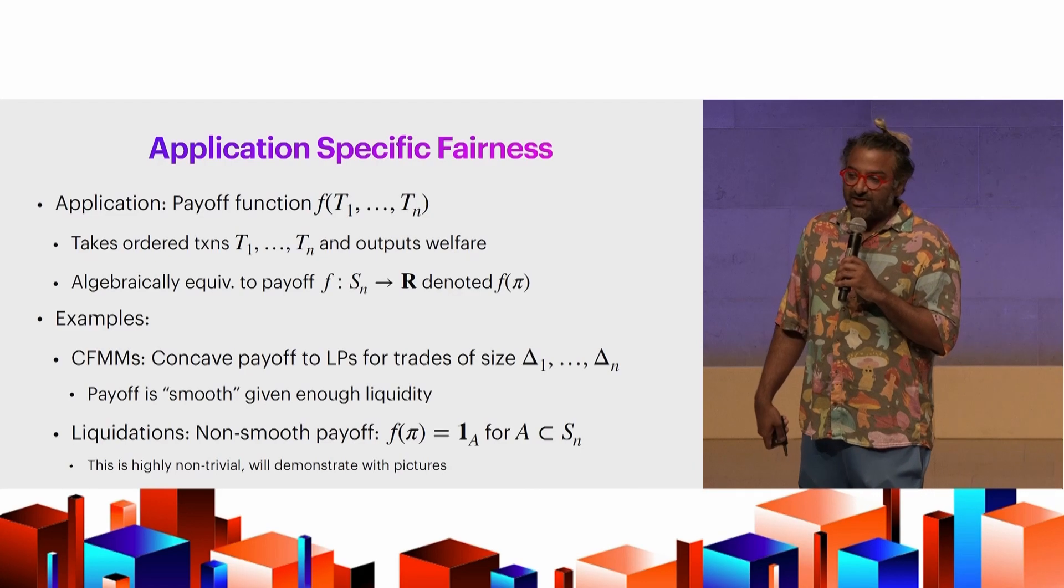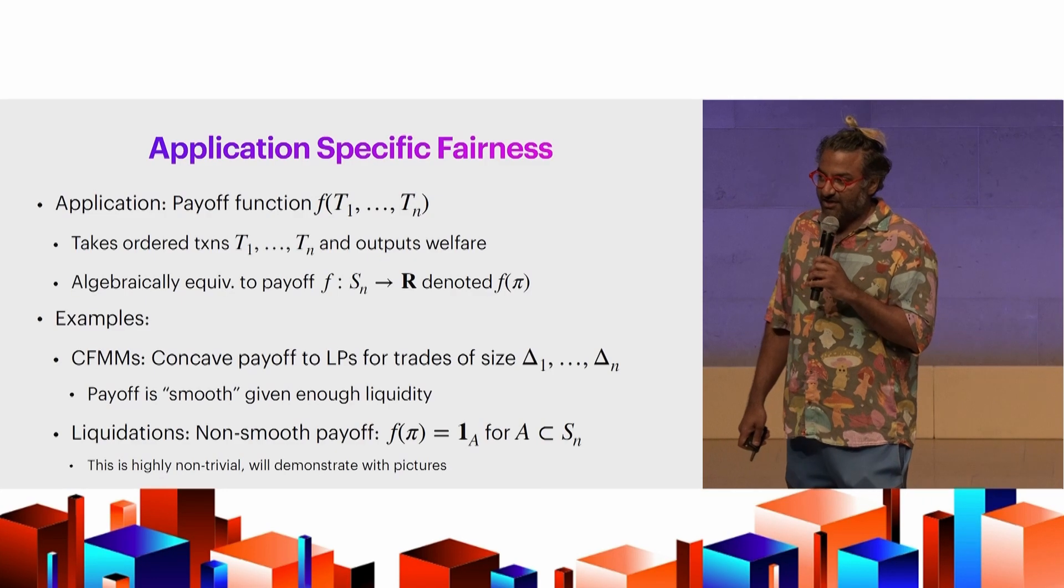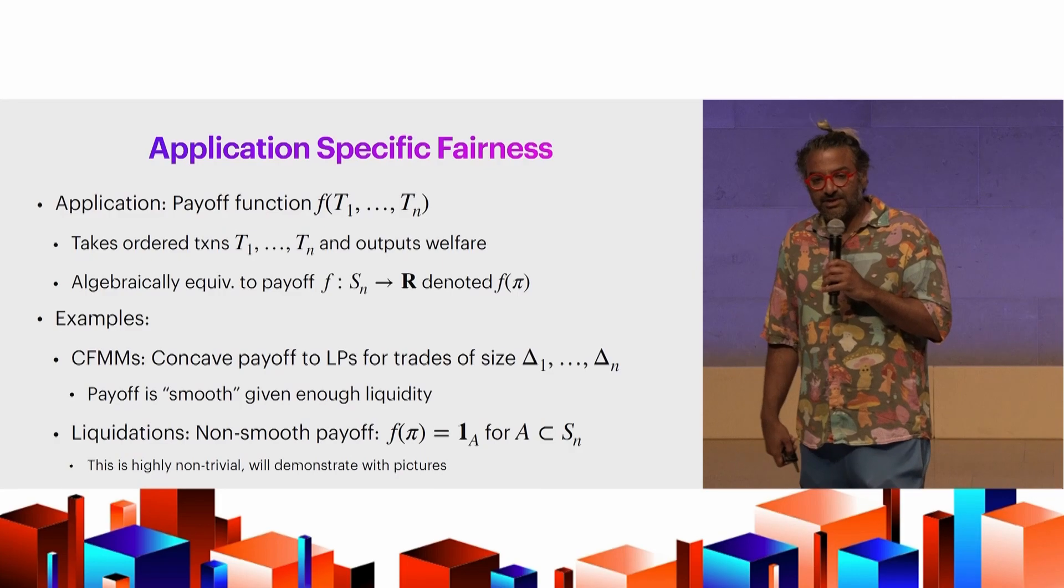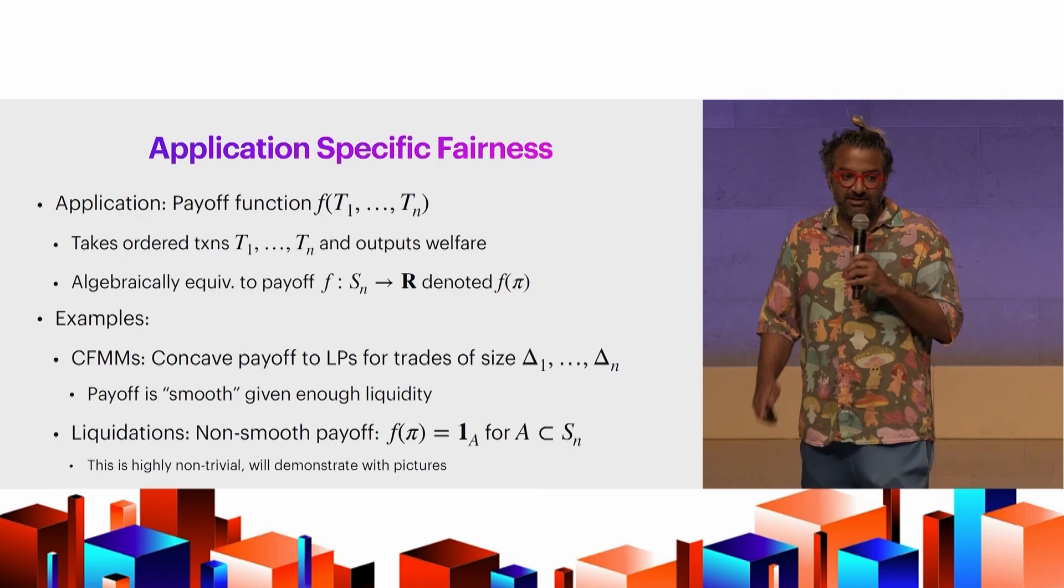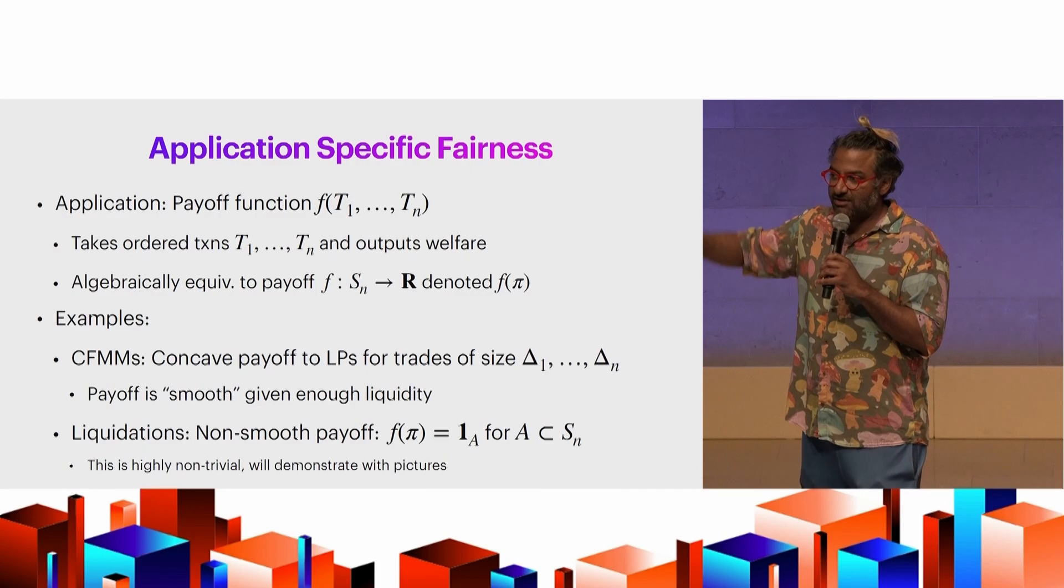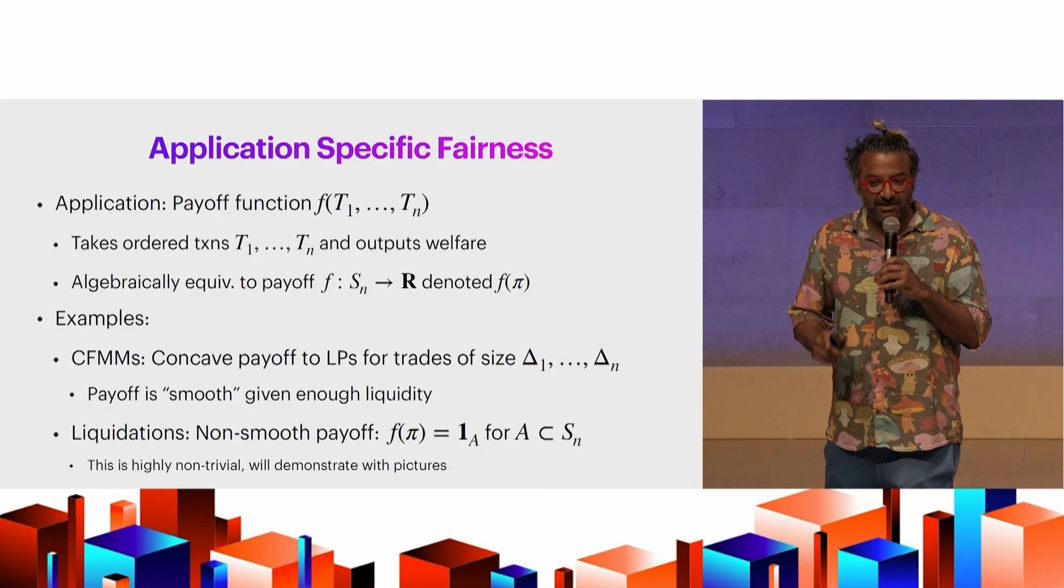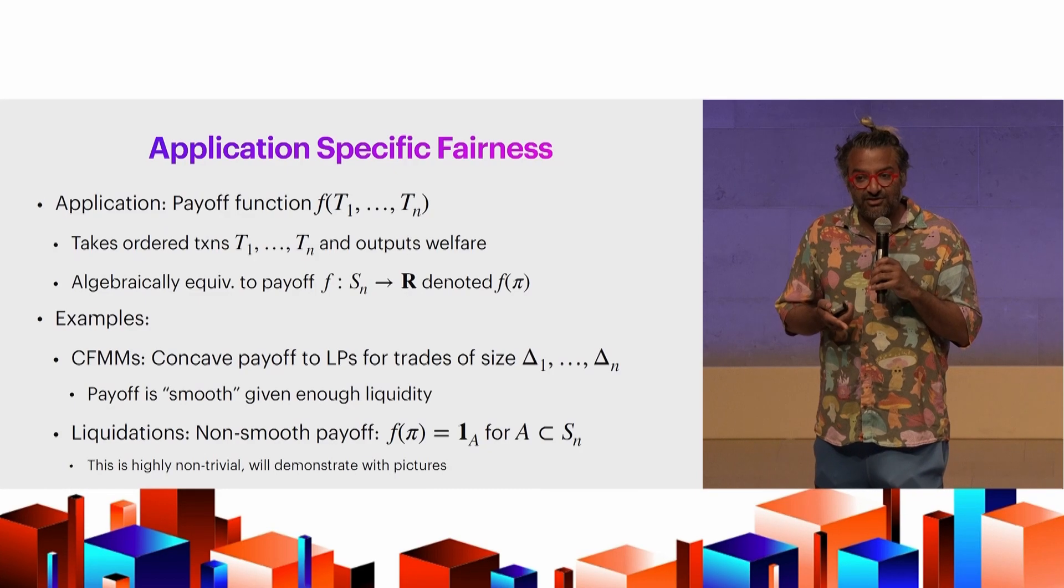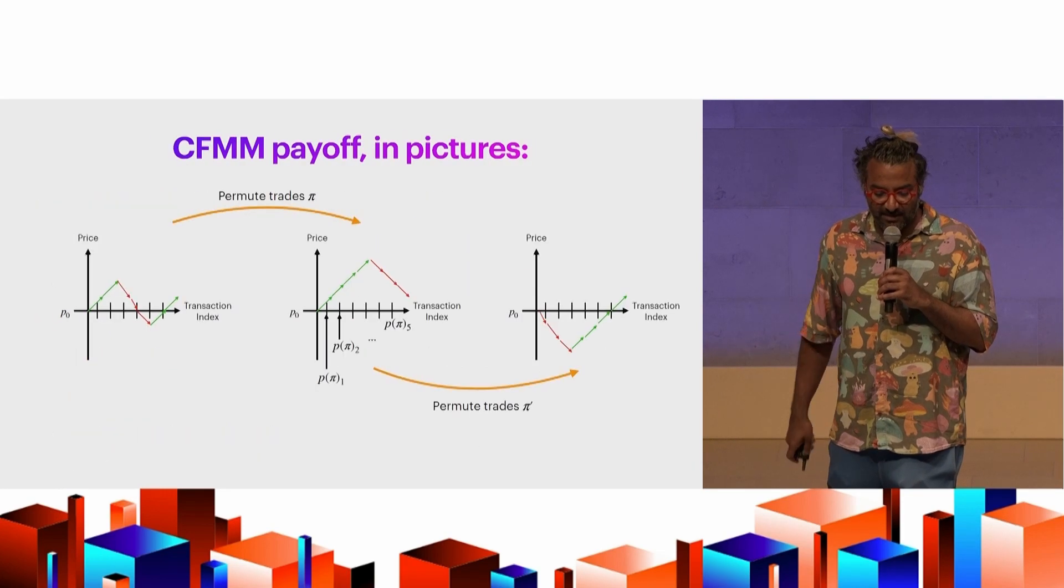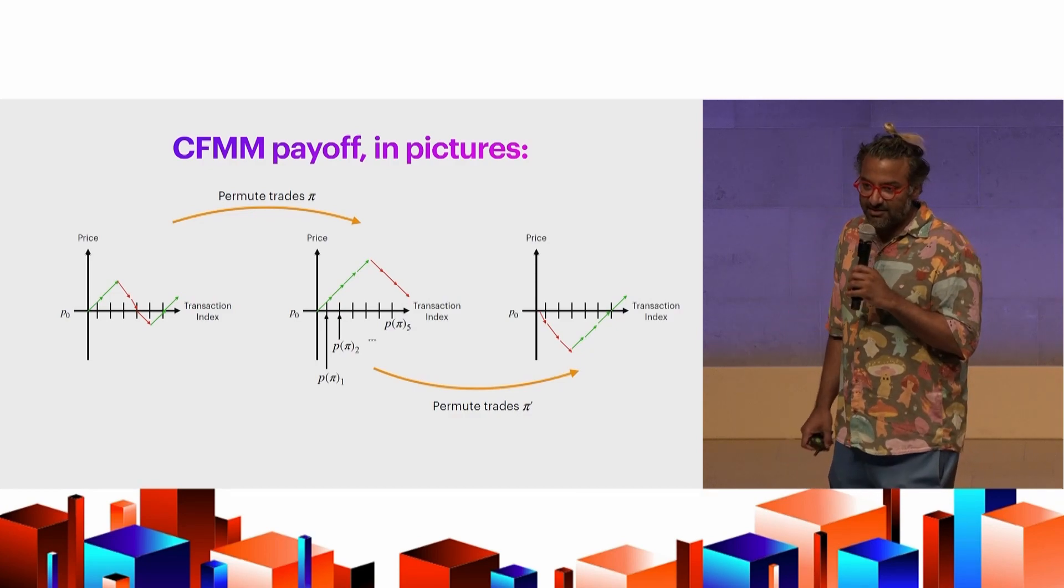So in AMMs, you have kind of this very smooth payoff. With enough liquidity, reordering doesn't really change the price impact enough, and you can kind of smoothly vary how that looks. But then, on the other hand, we have liquidations, right? Liquidations are very not smooth. You know, if the price never touches a certain point, there's no payoff to the user, to, say, a searcher. Of course, if the price touches a single point, you have a jump and discontinuity in your payoff. And so what we'll see is that these actually turn out to be the fundamental basis of all the payoffs of this form where you're looking at reordering.